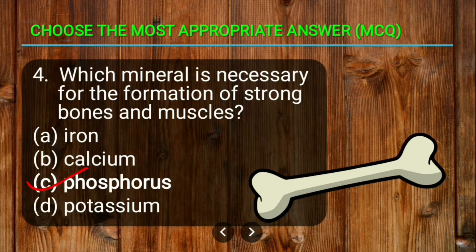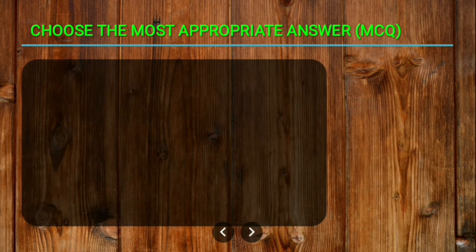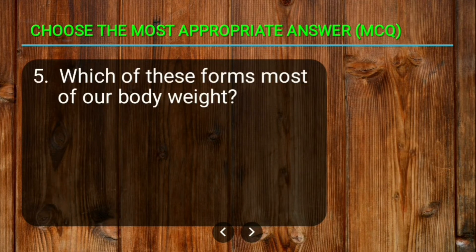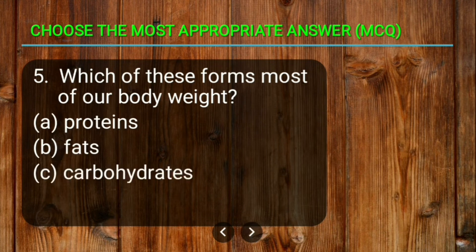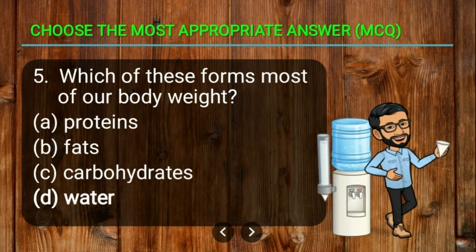The next question is: which of these forms most of our body weight? The options are proteins, fats, carbohydrates, and water. The correct answer is water. Water is the material which forms the most part of our body weight.